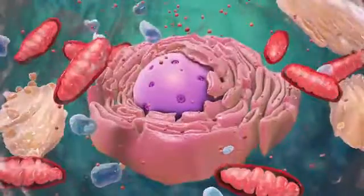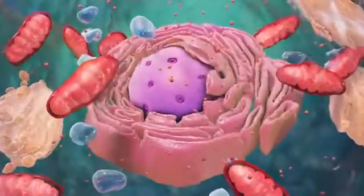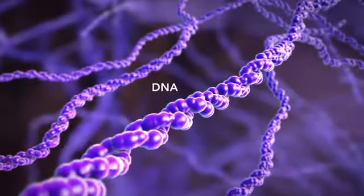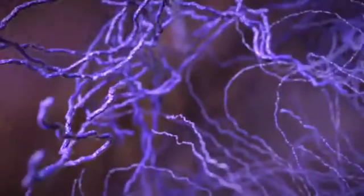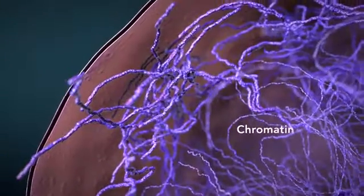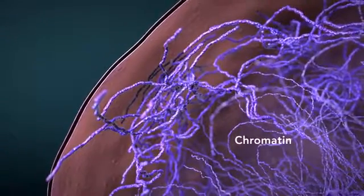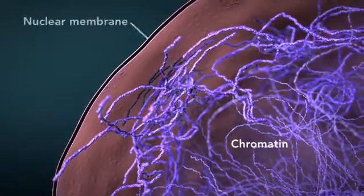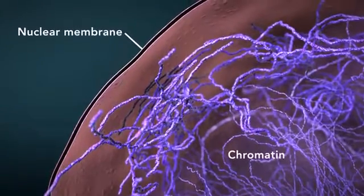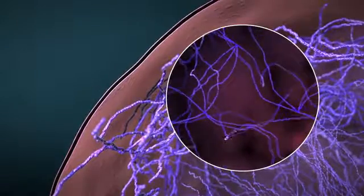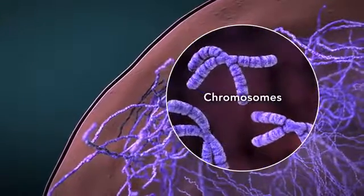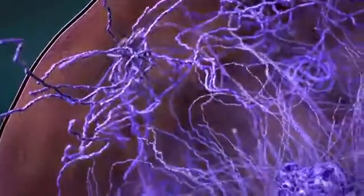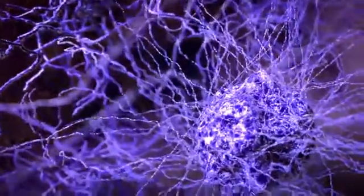The nucleus contains DNA or genetic material. DNA dictates what the cell is going to do and how it's going to do it. Chromatin is the tangled, spread-out form of DNA found inside the nuclear membrane. When a cell is ready to divide, DNA condenses into structures known as chromosomes. The nucleus also contains a nucleolus, which is a structure where ribosomes are made.